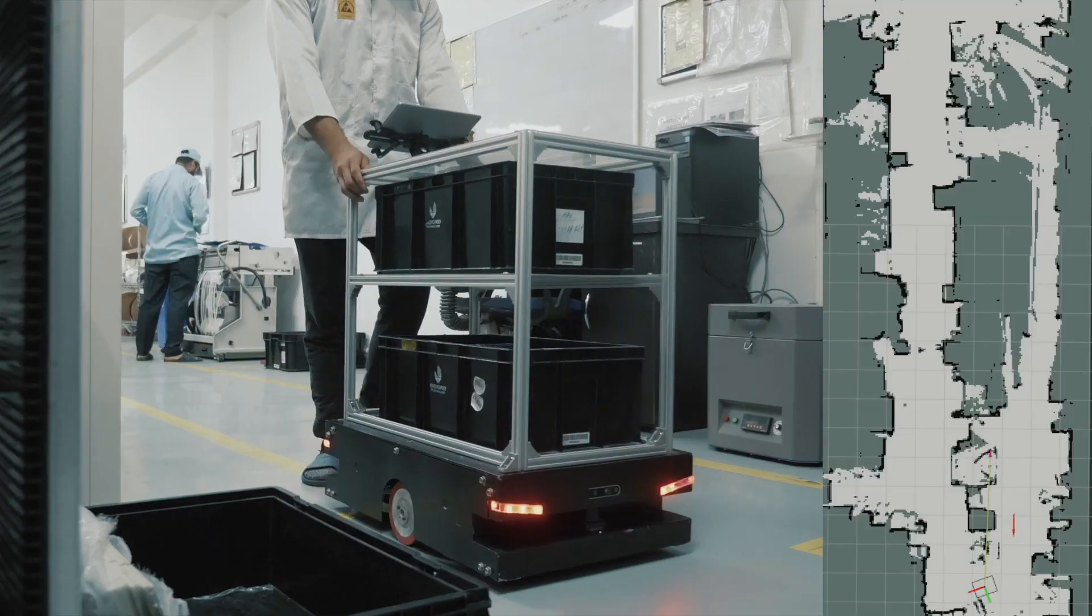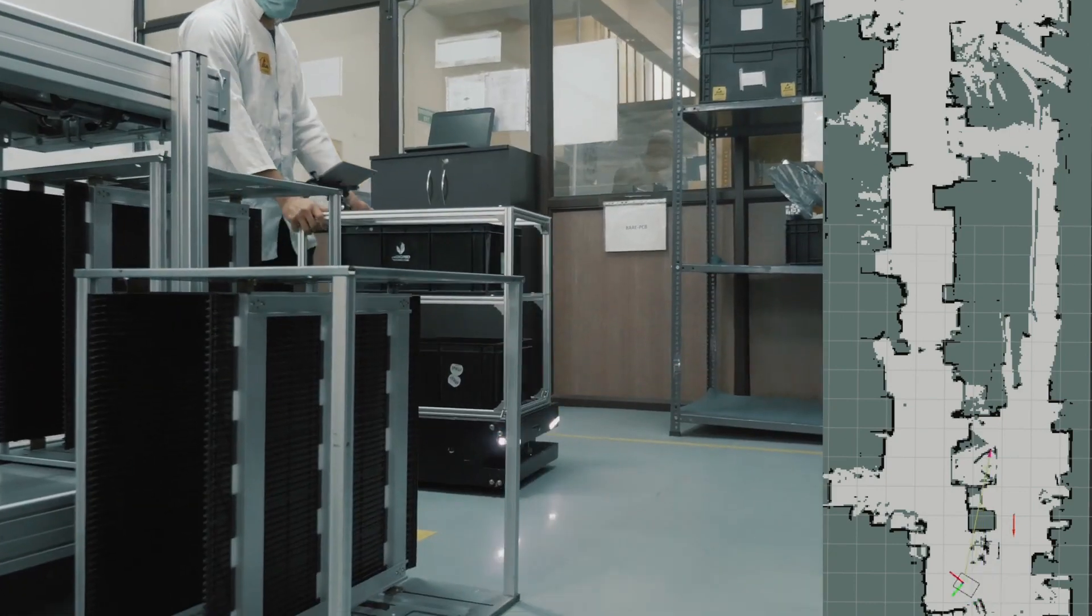Operators simply steer the robot like a shopping cart along the path to teach it how to perform the task autonomously.